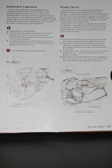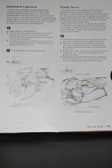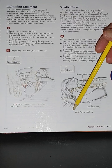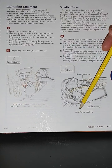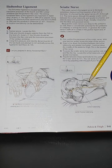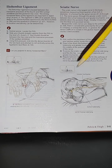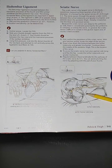The sciatic nerve is the largest nerve in the body. Looking at image 6.151, the client is in a sidelying position and the therapist is trying to locate the sciatic nerve. This is the greater trochanter and this is the ischial tuberosity.